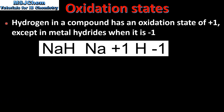Hydrogen in a compound has an oxidation state of plus 1, except in metal hydrides when it is negative 1. Here we have sodium hydride — the sodium has an oxidation state of plus 1 and the hydrogen has an oxidation state of negative 1. This is quite a rare example, and in most cases hydrogen has an oxidation state of plus 1.